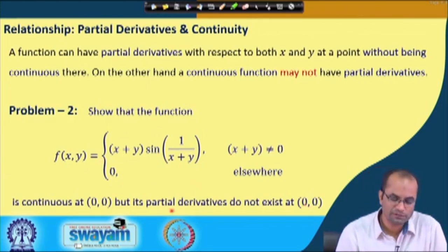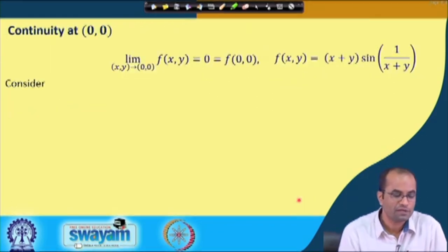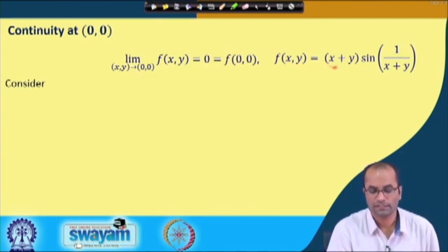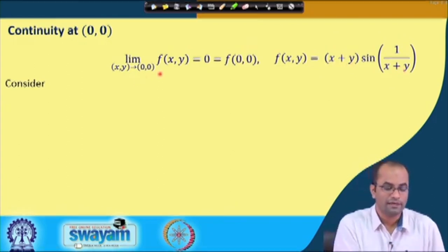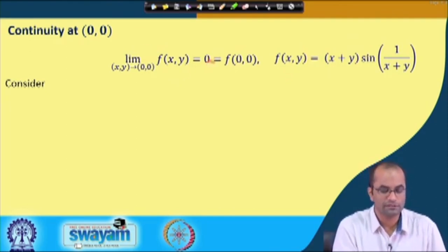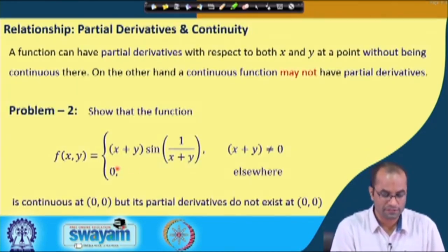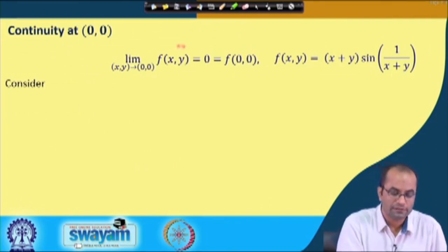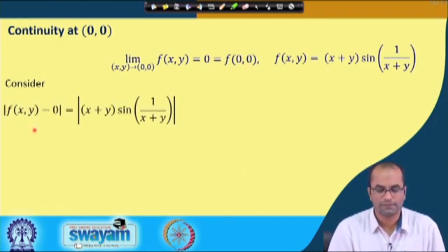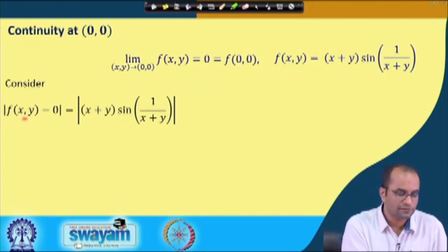Consider the function f(x, y) = (x + y)sin(1/(x+y)) for x+y ≠ 0, and f = 0 at (0,0). Both partial derivatives do not exist at (0,0). To check continuity at (0,0), we need to show that the limit as (x,y)→(0,0) of f(x,y) equals 0 — equal to the function value there. We use the epsilon-delta definition.